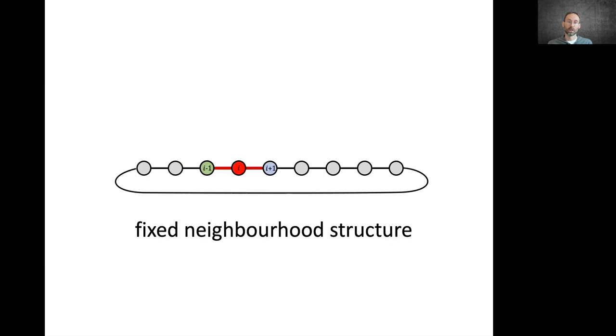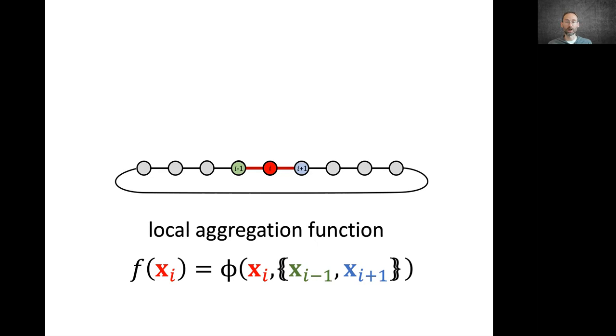In this example, we have exactly two neighbors for each node. Not only that, the order of the neighbors is fixed.